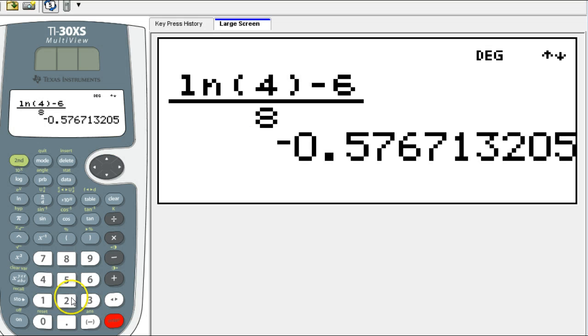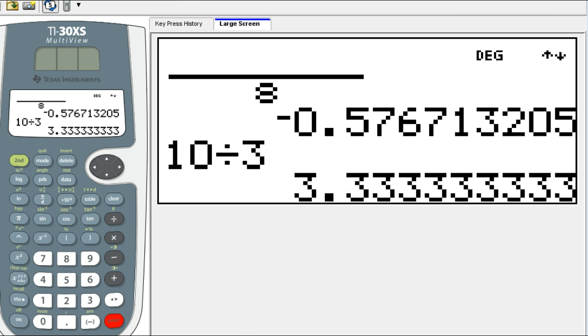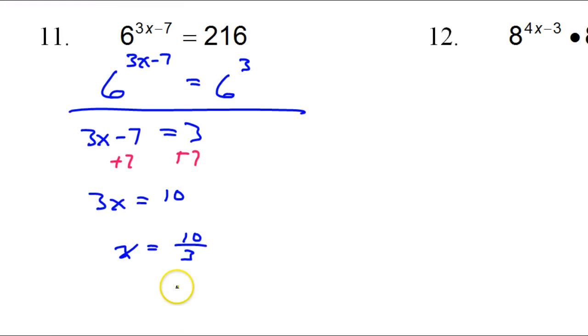And then we'd get 3x. That's horrible 7. That's 3x is equal to 10. So x is equal to 10 over 3. And as a decimal, 10 divided by 3 is 3.33. So that's one way to do it.